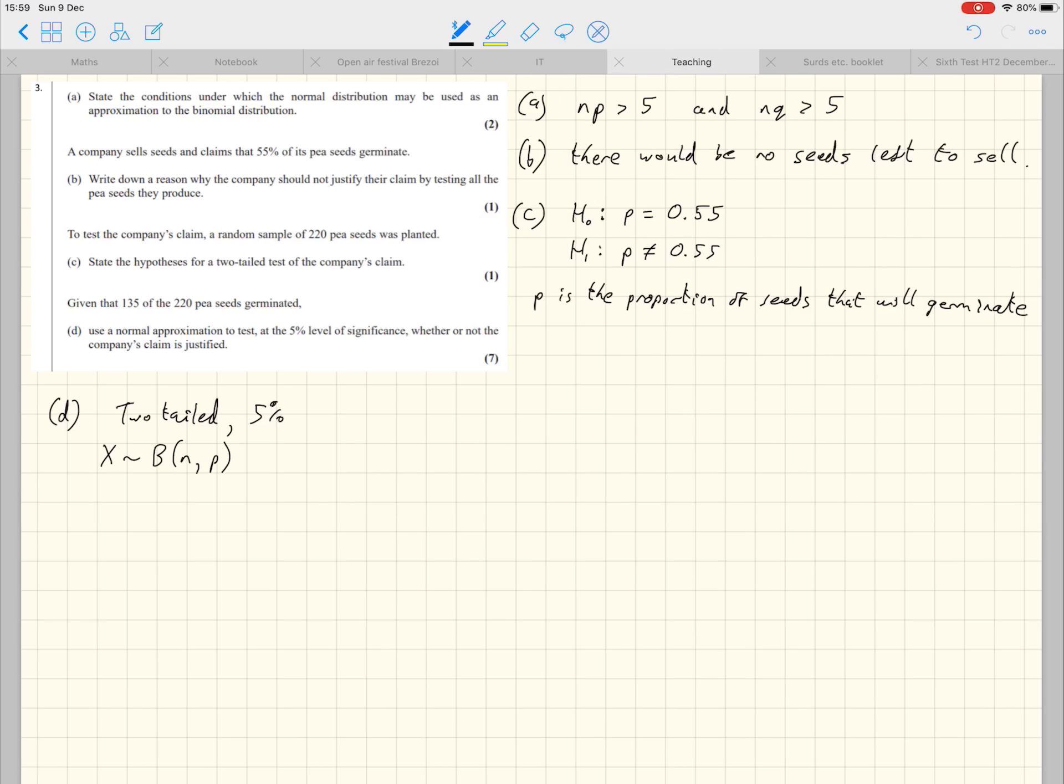Remember, it's B(n,p). So n is the number of trials, and P is the probability of success in a single trial under H0. So we've got 220 trials, and 0.55. We should say that X is the number of seeds in the sample of 220 that germinate. Right, next thing to note is that we're given the experimental data of 135.